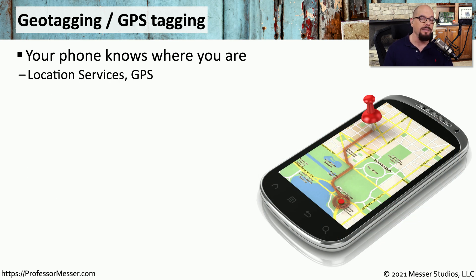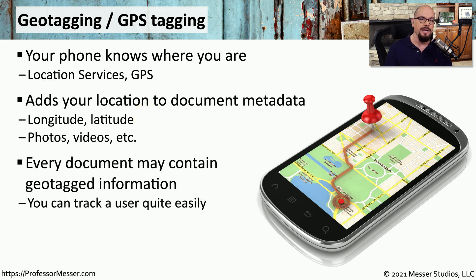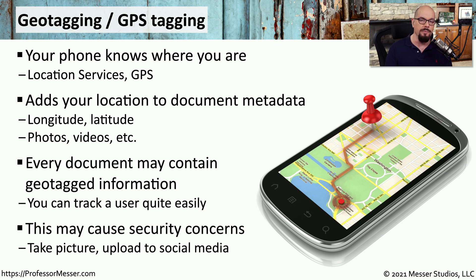We've already talked about enabling or disabling features based on where you happen to be — we refer to this as geofencing. But information about where you are can also be stored into files; this is called geotagging or GPS tagging. When saving a document, taking a picture, or storing audio on your mobile device, additional information is stored as metadata, which might include your longitude, latitude, or other location information. This means if you have access to documents on this device, you might also know where this user has been — which could be a security concern. You may want to configure your MDM or mobile device to not save location information when storing files.